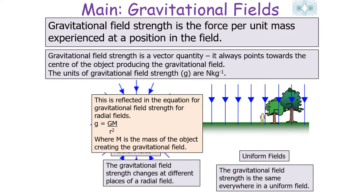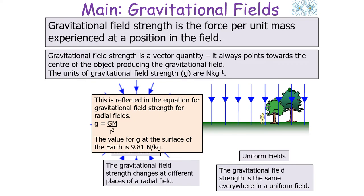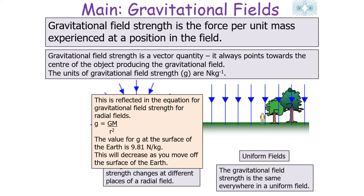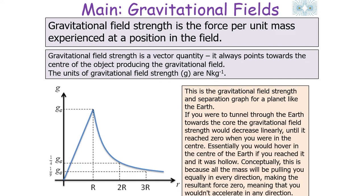The value of gravitational field strength at the Earth's surface is 9.81 N/kg, but it decreases as you move away by a factor of 1/r². If you were to tunnel through the Earth towards the core, the gravitational field strength would decrease linearly until it reaches zero at the centre. Conceptually, at the centre all the mass pulls equally in every direction, making the resultant force zero, meaning you wouldn't accelerate in any direction.